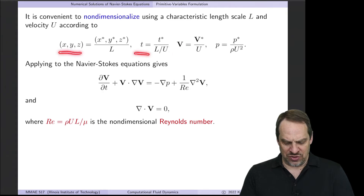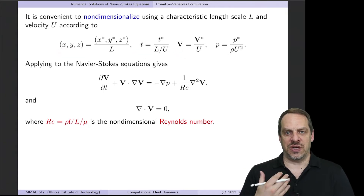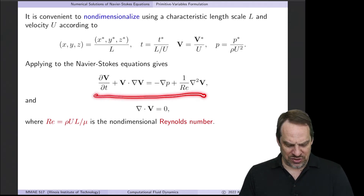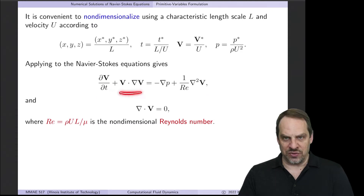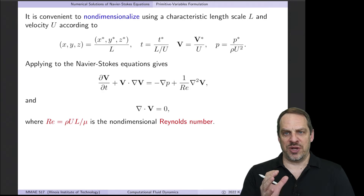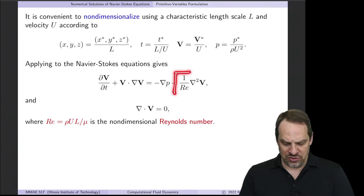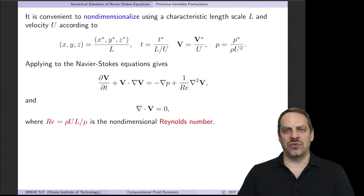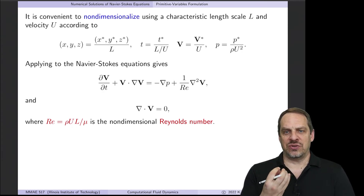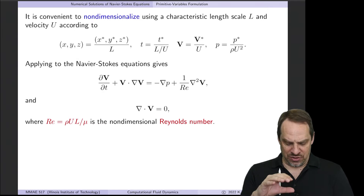When we rewrite our Navier-Stokes equations in terms of all these non-dimensional variables, notice what happens. Here's that same momentum equation: the time derivative, the v·∇v term, minus the gradient of the pressure, and then the viscous terms. But the ρ is gone, the μ is gone — all of the physical parameters have been wrapped up into a single non-dimensional parameter known as the Reynolds number. It's defined as ρuL/μ, and it's non-dimensional: the units of all those quantities cancel out. We have a non-dimensional number that characterizes all the physical and geometric information about our particular problem.